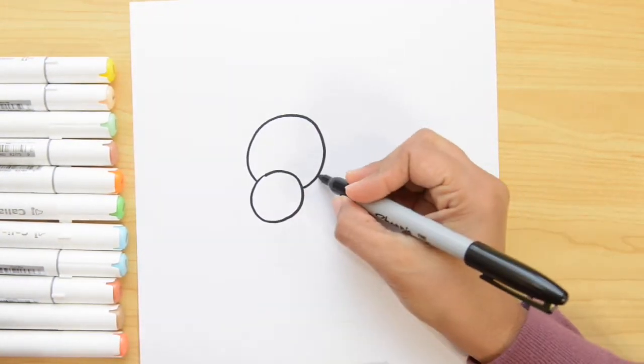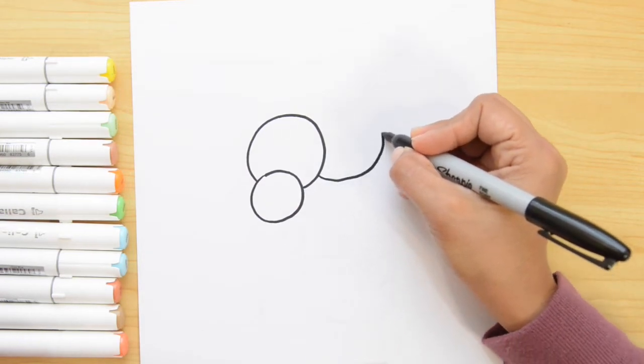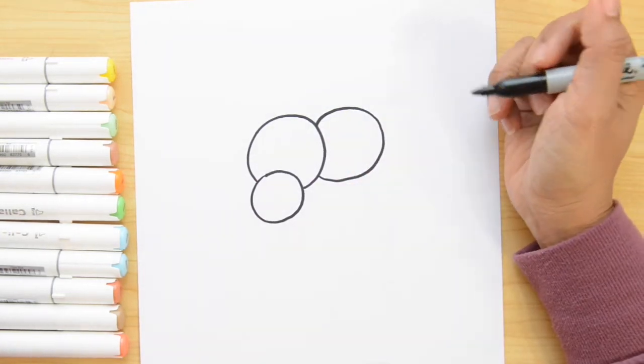Let's do one more here next to it and this is gonna be the head of Joseph. So let's go slow and around and close. Good!